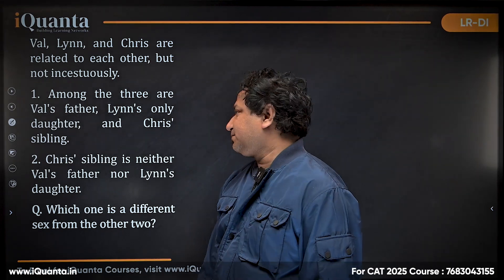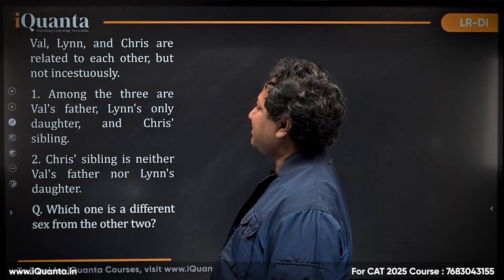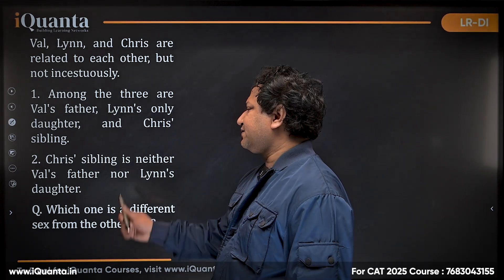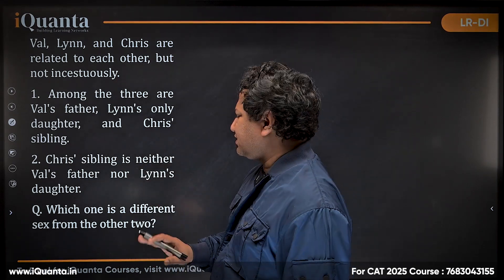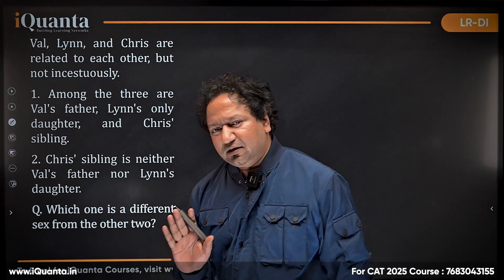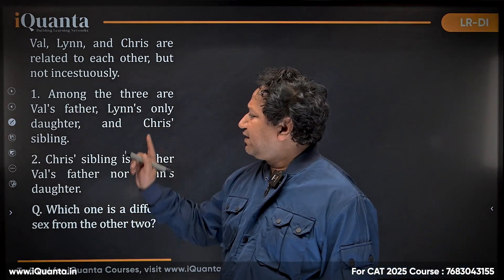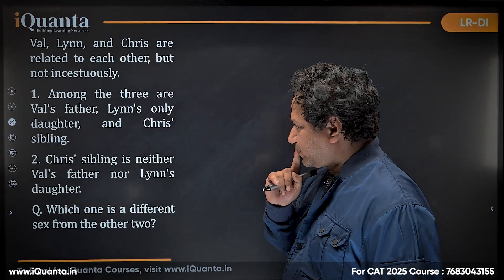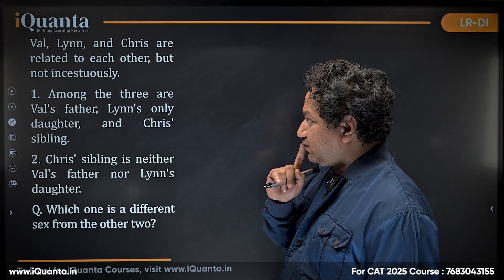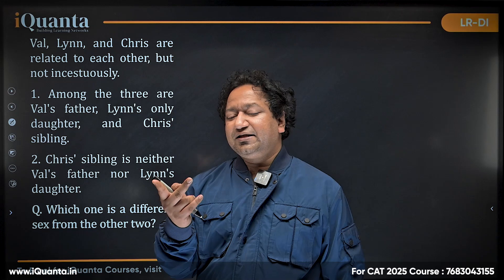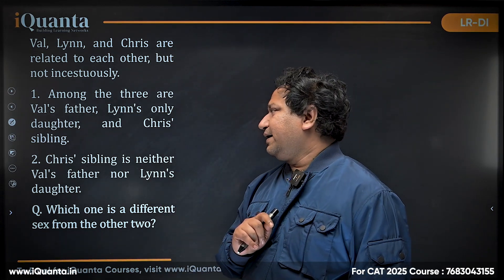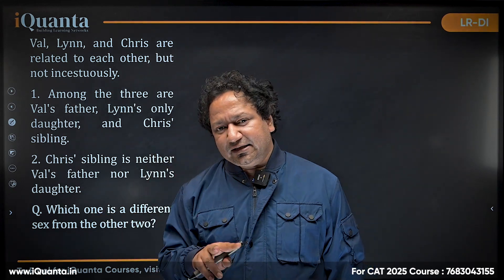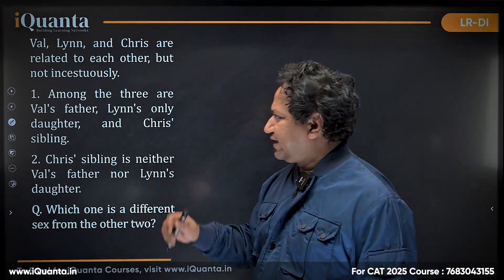Val, Lynn, and Chris are related to each other but not by marriage. The first statement says: among the three are Val's father, Lynn's only daughter, and Chris's sibling. The second statement says: Chris's sibling is neither Val's father nor Lynn's daughter. So which one is of a different sex from the other two? One thing is for sure: if one is a father, they must be male; a daughter must be female. There can be two males and one female, or two females and one male.